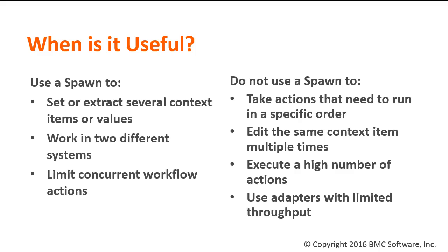Because a spawn executes requests in parallel, you should not use it for actions that you do not want to run together. If you have two paths trying to use or edit the same context item, and one relies on the other, you could have a race condition, where the path you want to run second actually finishes first.